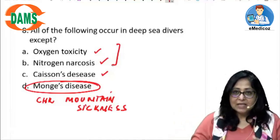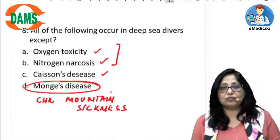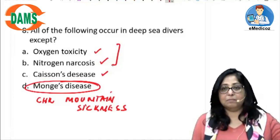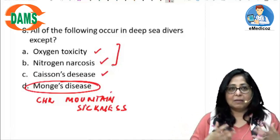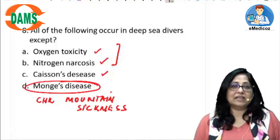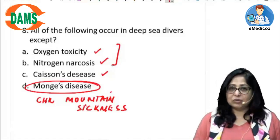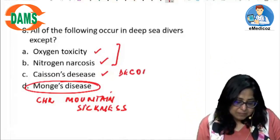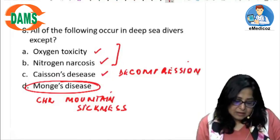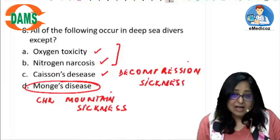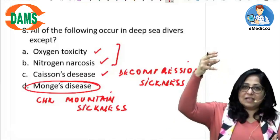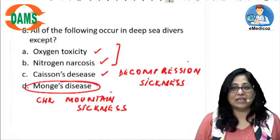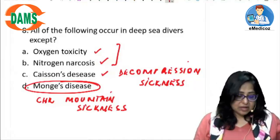Oxygen toxicity and nitrogen narcosis occur in deep sea divers because as you go underwater, the surrounding pressure increases, causing increased solubility and density of gases. The mixture of air a diver breathes — oxygen and nitrogen — tends to become highly soluble underwater, giving rise to oxygen toxicity and nitrogen narcosis. Caisson's disease is decompression sickness, seen when the diver rapidly ascends to the surface. Underwater, gases dissolve more; as he surfaces, these gases tend to form emboli. This is known as decompression sickness or caisson's disease, also called dysbarism.